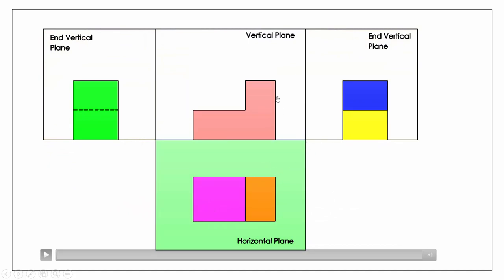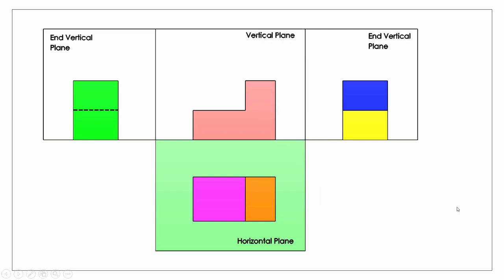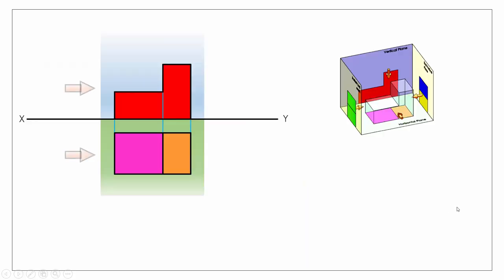The height should be able to be taken straight across to the height in the other view, saving us from having to re-measure. We can transfer from our plan view the widths to give us the widths in our end view, and we should be able to transfer the height straight across from our front elevation. So we're going to look at three ways we go about doing this.